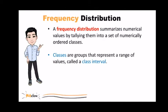When you have a dataset that contains a large number of values, reaching conclusions from an ordered array can be difficult. For such datasets, creating a frequency or percentage distribution and a cumulative percentage distribution would be a better choice. A frequency distribution summarizes numerical values by tallying them into a set of numerically ordered classes. Classes are groups that represent a range of values called a class interval.